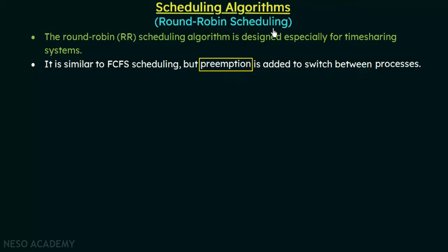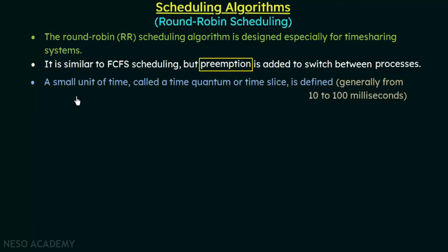Round robin scheduling is in one way similar to first come first serve, but preemption is added to switch between processes. A small unit of time called a time quantum or time slice is defined, which is generally from 10 to 100 milliseconds. Each process will be assigned this time quantum for its execution.